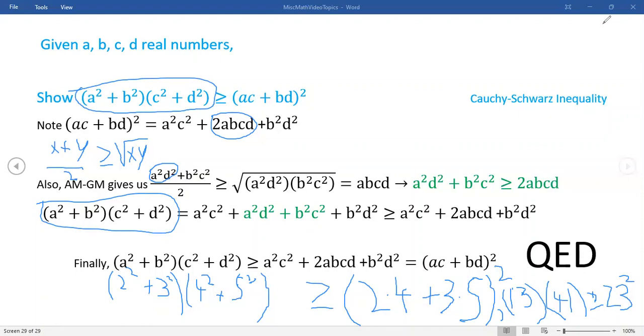So here we go, 13 times 41. I'm getting 533 right here. And then right over here 23 squared is 529. So it beats it by just 4 there. So this would be 529. I did get 533 is greater than or equal to 529.